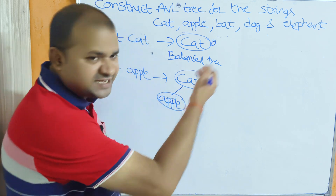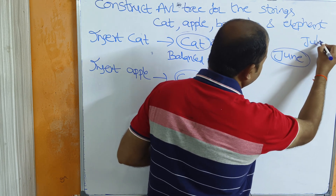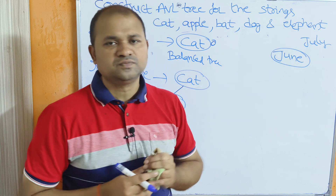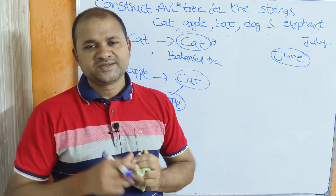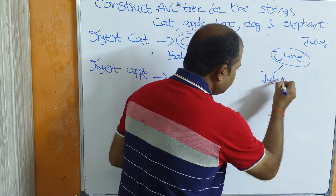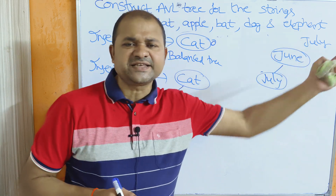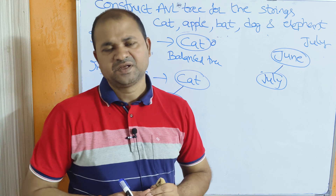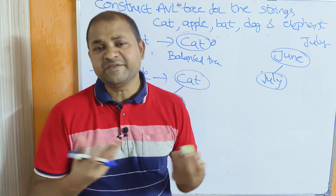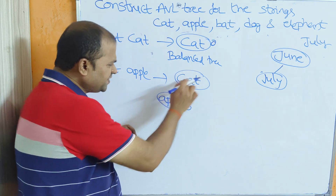To illustrate string comparison: if the root node is 'june' and we insert 'july', compare 'j' with 'j' — same; 'u' with 'u' — same; then 'l' with 'n'. Since l comes before n, l is less than n, so july is inserted as the left child. We compare strings character by character; if the first characters are the same, compare the second, and so on. For apple, the balance factor is 0. For cat, left subtree height is 1, right is 0, so balance factor is 1 — the tree is balanced.